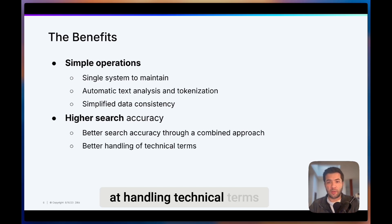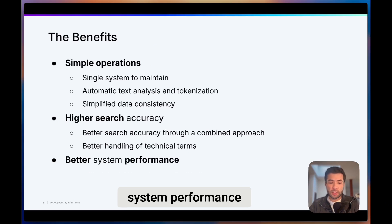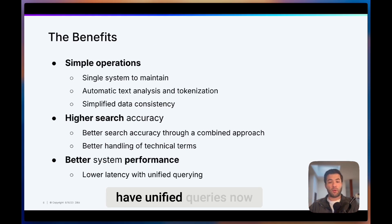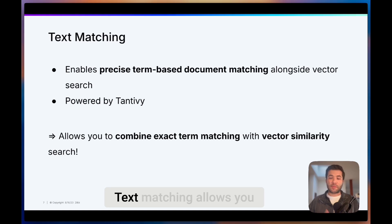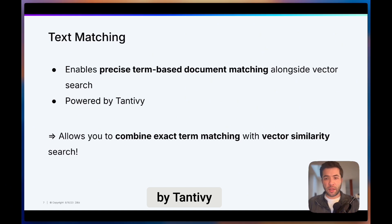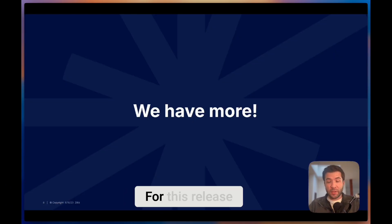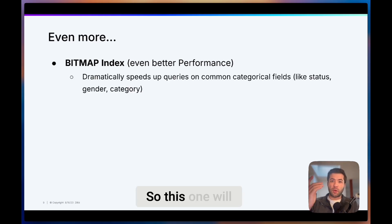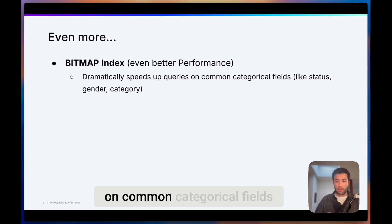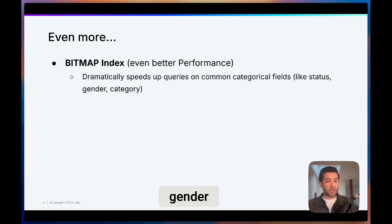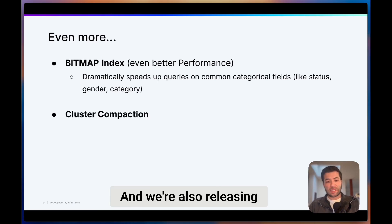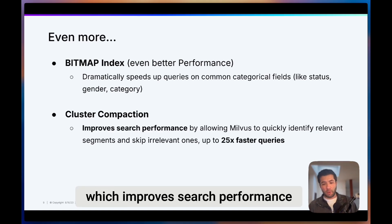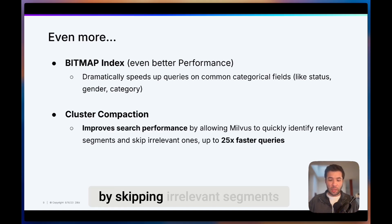It's also better at handling technical terms. You also get better system performance with lower latency because you have unified querying now. Text matching allows you to have precise document matching alongside vector search, and this is powered by Tantivy. We're also releasing bitmap index, which will speed up your queries on common category fields like status, gender, or category. And we're also releasing cluster compaction, which improves search performance by skipping irrelevant segments — up to 25x faster queries.